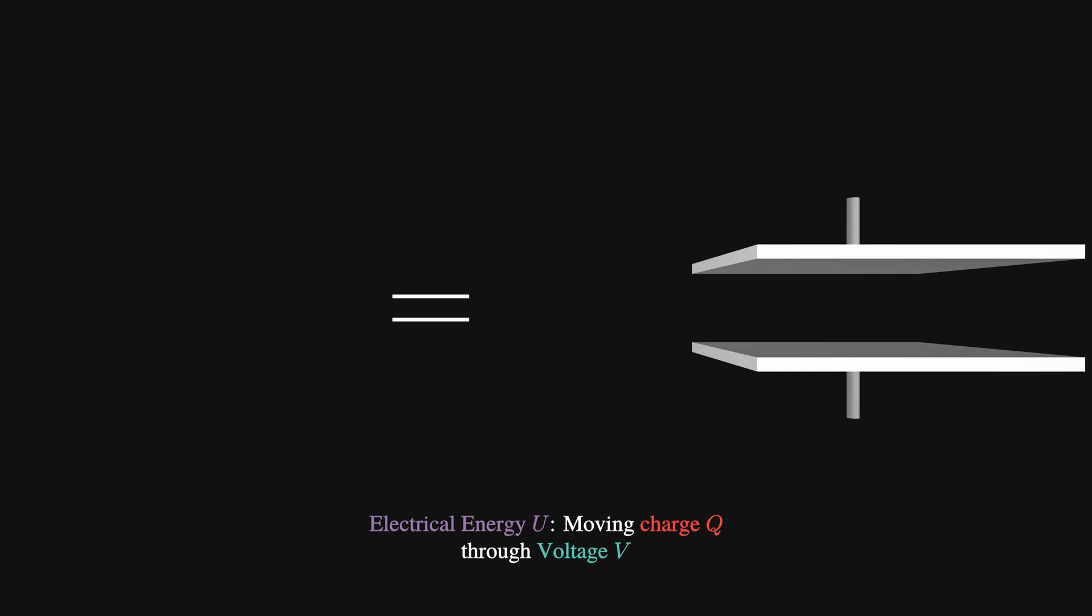So let's start with something that sounds obvious, but is fundamental to everything we're going to speak about. That is, the only way energy ever enters or leaves a capacitor is by moving charge through a voltage. This is the key to all discussions about electrical energy, and we'll now use it to understand our capacitor.